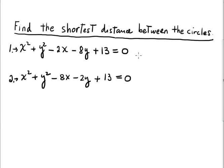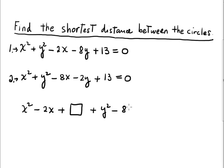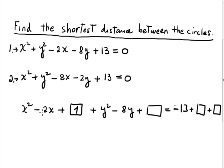I need to determine the radius and center. Using the completing the square idea: x squared minus 2x plus box, plus y squared minus 8y plus box, equals negative 13 plus box plus box. The number in the first box: 2 divided by 2 is 1, squared is 1. The number in the second: 8 divided by 2 is 4, squared is 16. So we have 16 here and 1.